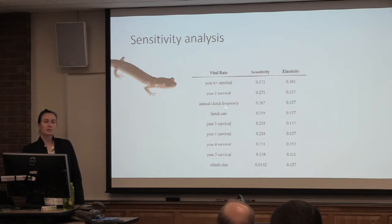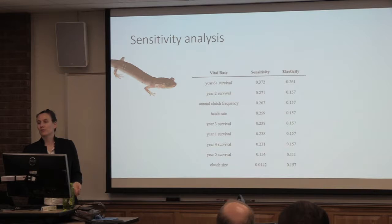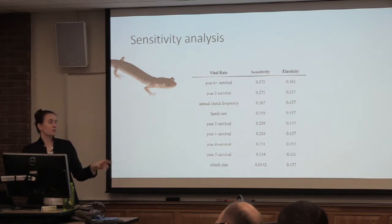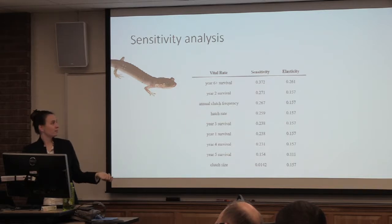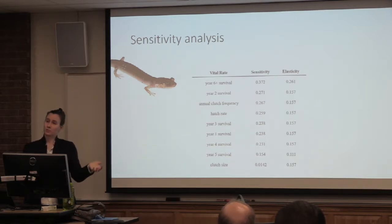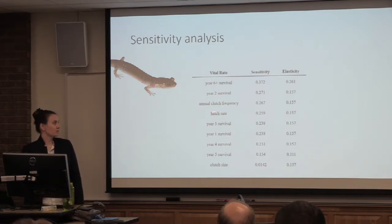Interestingly, annual clutch frequency is also really impactful. Imagine that things are getting drier — say there's a drought regime starting because of climate change. If things are generally drier and the active season is reduced, then annual clutch frequency could be really significant to population growth rate, because drought could be reducing the foraging period and reducing the number of times a female can reproduce. So that's really interesting.